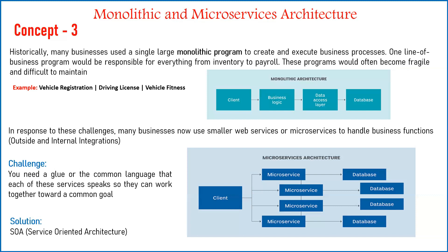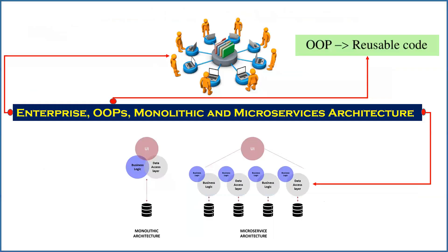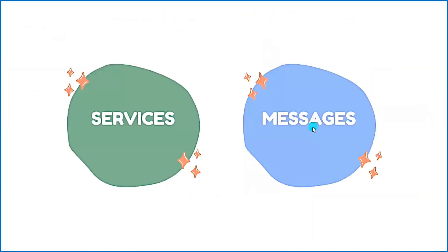SOA is an option to integrate your microservices or multiple services with each other for whatever reasons they need to communicate. This makes the system loosely coupled — if there is a problem with any microservice, it can be upgraded or shut down independently of the other applications. So now we are clear on the enterprise, object-oriented programming, and monolithic and microservices architecture. Let us begin with the SOA suite concept.